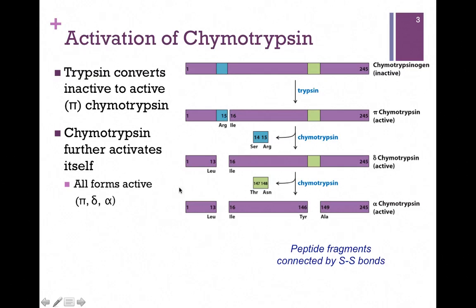Note that both of these are active forms. In the final step, chymotrypsin does one more cut, pictured in lime green here. It's going to cut out the dipeptide threonine-asparagine, residues 147 and 148. And here we have the final form: alpha-chymotrypsin. Note that chymotrypsinogen is the inactive form, and pi, delta, and alpha are all active forms. Although alpha-chymotrypsin looks here as if there are three separate polypeptides, they're all peptide fragments connected by disulfide bonds, so it's all still part of the same protein.